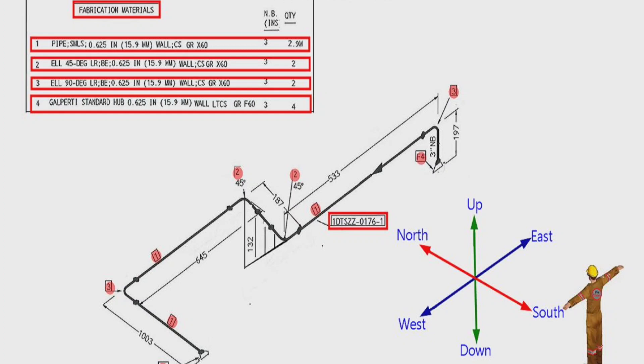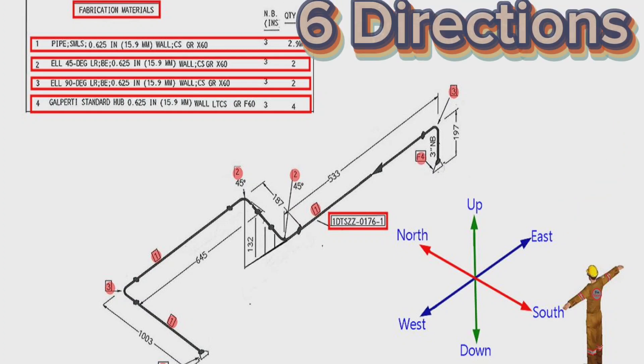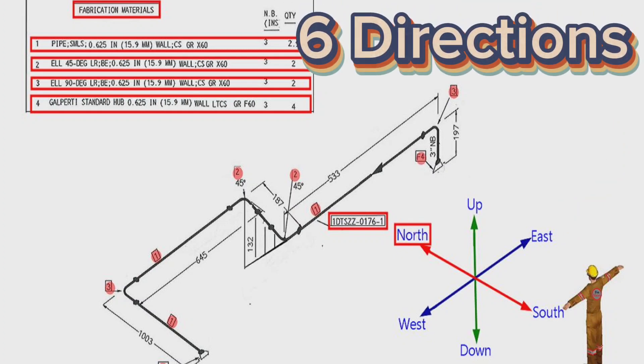Every pipe drawing has such a sketch, this indicates the directions. By studying these directions, we can easily read any pipe isometrics. There are six directions here: North direction, South direction, East direction, West direction, Up direction, Down direction.